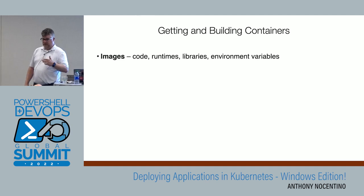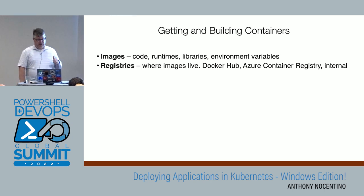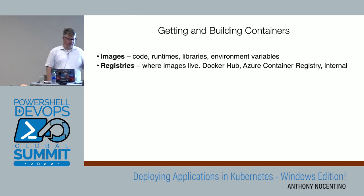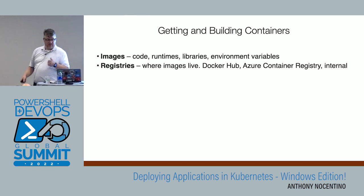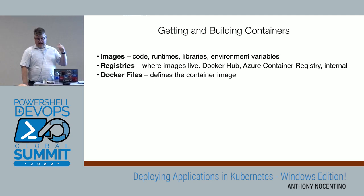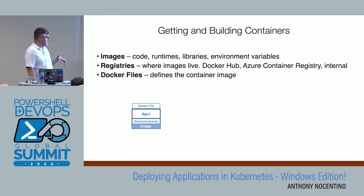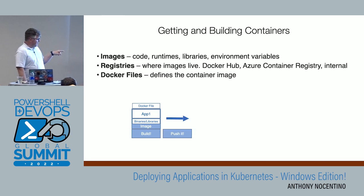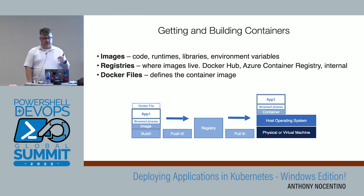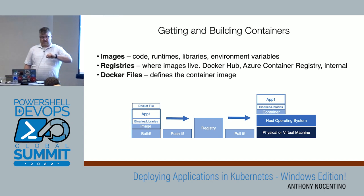Let's talk about building containers. We're going to build an image today — an image is your code, the execution environment for whatever you want to run. We're going to take that image and stick it in a registry. Today we're going to focus on Azure Container Registry. We're going to use Dockerfiles to build a thing — specifically a Dockerfile to build an IIS-based Windows application. The process is: build an image from a Dockerfile, push it into ACR, then pull it down into AKS and run our application. That's the coolness of running containers — I can take this app and deploy it very, very quickly.